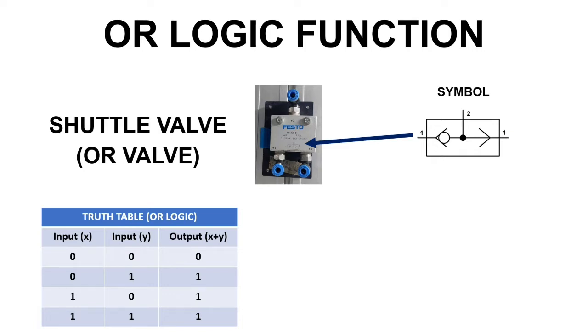Always remember that 0 stands for OFF or inactive signal, and 1 stands for ON or active signal. As you can see on the table, on the first row, there is no active signal in the inputs and therefore, the output is OFF.